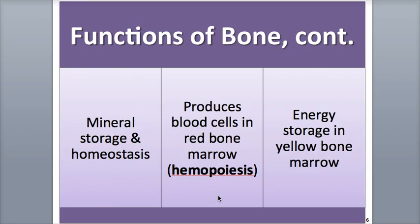Red bone marrow is abundant in developing fetal bone, and in the adult bones, it's found in the irregular bones, such as the ribs, the sternum or breastbone, the hips, the vertebrae, and the skull. It's also found in the ends of the long bones, such as the humerus, the upper arm bone, and the femur, or thigh bone.